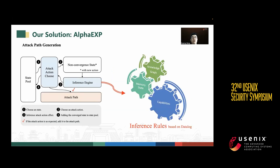Next, we generate the attack path to find sensitive objects. We design a framework with a state pool to store states, picking a state and user-level operations to infer. If the result of inference can upgrade the capability, we give that state a high score so it can be selected more often next, and mark the corresponding object as sensitive. Since the inference engine uses rule-based reasoning, we use Datalog to finish this work. We designed rules to describe the knowledge graph, memory state, and capabilities.